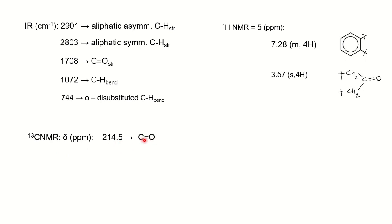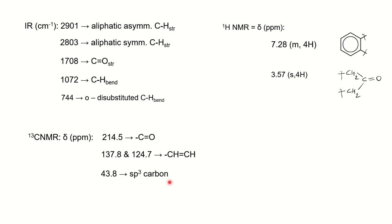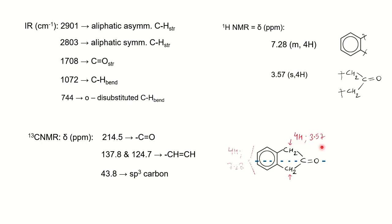The 13C NMR data supports this: 214.5 ppm for ketone carbonyl carbon; 137 and 125/124 ppm for aromatic/alkene carbons; 43.8 ppm for the sp3 aliphatic carbon. Combining the two groupings — the ortho-disubstituted aromatic ring and the two CH2 groups flanking a carbonyl — and checking against the molecular formula C9H8O, we arrive at a probable symmetric cyclic structure: 1-indanone (or a related indanone framework).